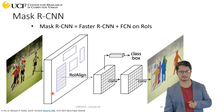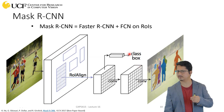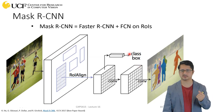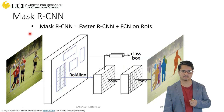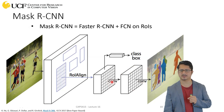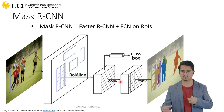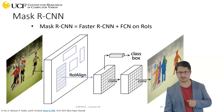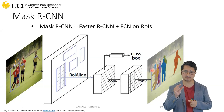Faster R-CNN was completely end-to-end with proposals done internally — it solves object detection. Now, on top of that, what Mask R-CNN does is take those features and add a very small, simple convolutional network on top, and it tries to find the fine boundary of that particular instance.